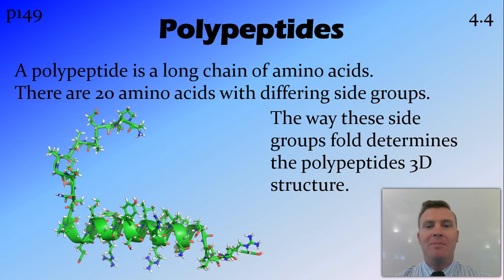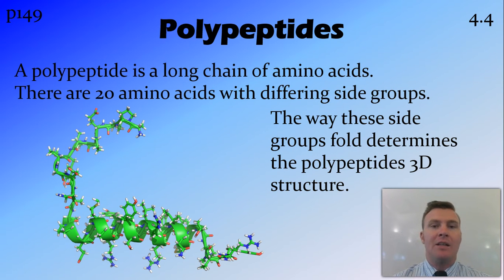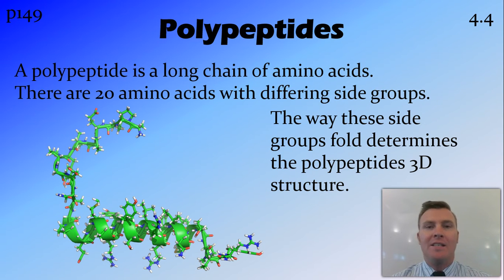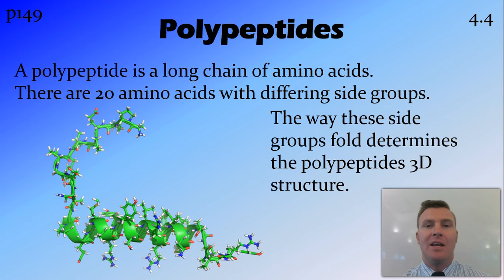So what's a polypeptide? It's a long chain of amino acids. We've talked about amino acids being the building blocks of proteins. There are 20 amino acids and they have different side groups or side chains, and the way that these side groups interact with each other causes them to fold and determines their three-dimensional structure. So with those 20 amino acids, you can get lots and lots of different shapes of these polypeptides.